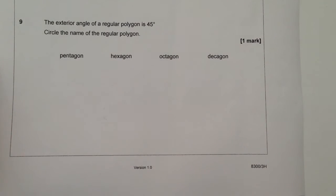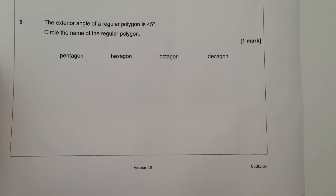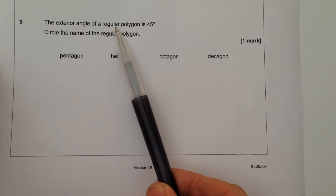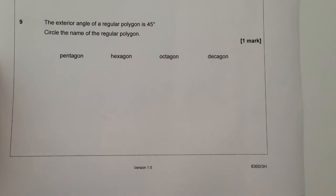This is a question from the new specification GCSE. I just thought I'd highlight it as a particular question because with these type of questions you need to be aware that the exterior angles of a regular polygon all add up to 360 degrees.